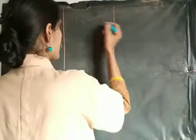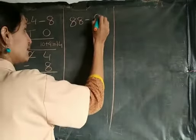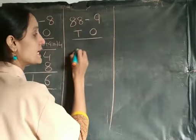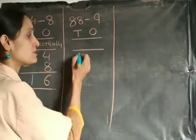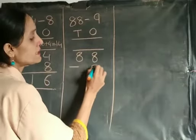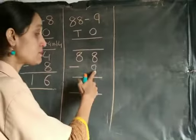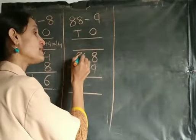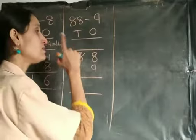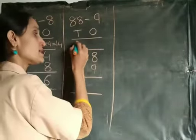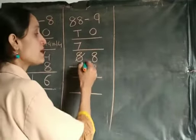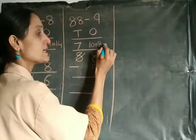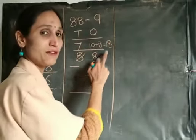Now the next example is 88 minus 9. Mark the 10s and 1s columns first, then leave a box here for the borrowing numbers. 88 minus 9. Now here 9 is the bigger number and 8 is the smaller number, so we can't subtract 9 from 8. So we need to borrow from the 10s column. When we are borrowing, we subtract 1 from the digit in the 10s column. So 8 minus 1 is 7. Write down 7 in the box. When we borrow 1 from the 10s column to the 1s column, it is 10. 10 plus 8 is 18. So we can subtract 9 from 18.